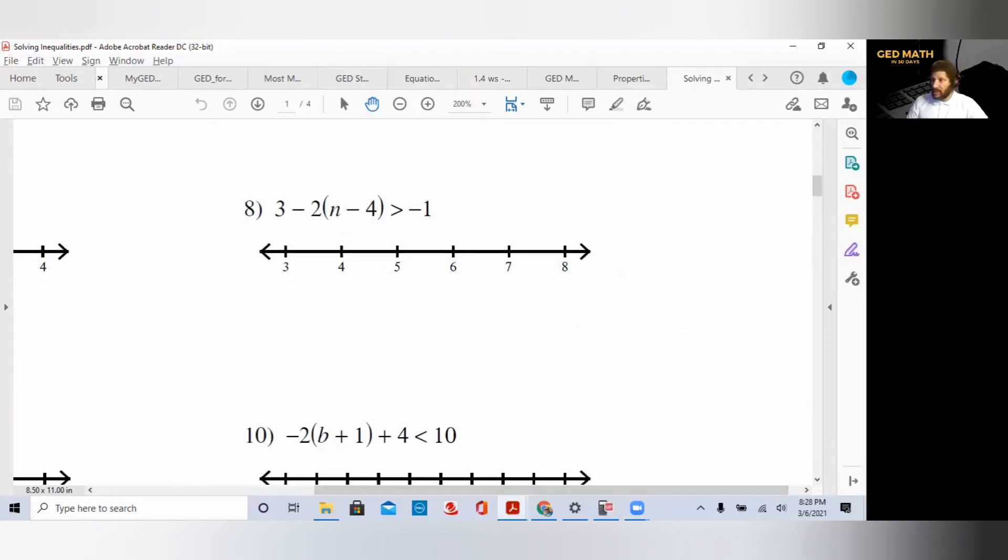We have to do multiplication first. We have to do this negative 2. Bring the 3 down. Negative 2 times n is negative 2n. Put your coefficient right in front of the variable. Minus 2 times negative 4, two negatives make a positive, so this is plus 4. It's greater than minus 1. You have to combine like terms, so we got minus 2n plus 7 is greater than minus 1.